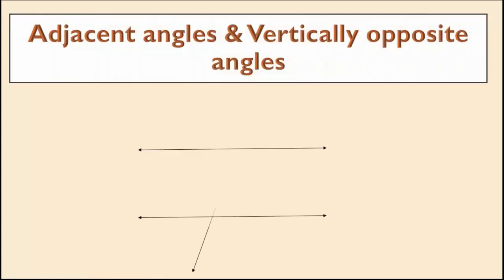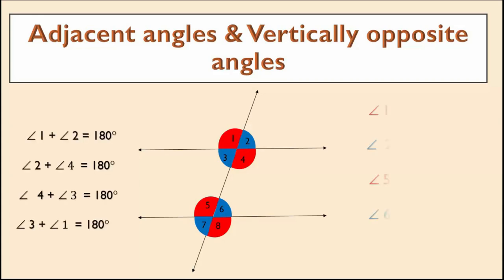There are eight pairs of angles which have a common vertex and common side. That means eight pairs of adjacent angles are linear pairs. They are: angle 1 and angle 2, angle 2 and angle 4, angle 4 and angle 3, angle 3 and angle 1. Similarly, angle 5 and angle 6, angle 6 and angle 8, angle 8 and angle 7, angle 7 and angle 5.